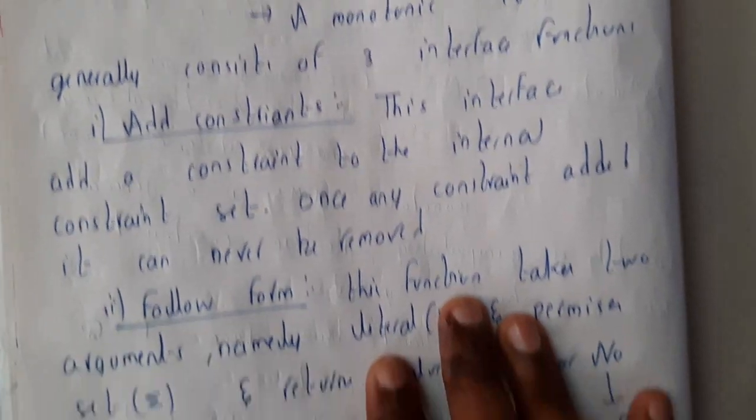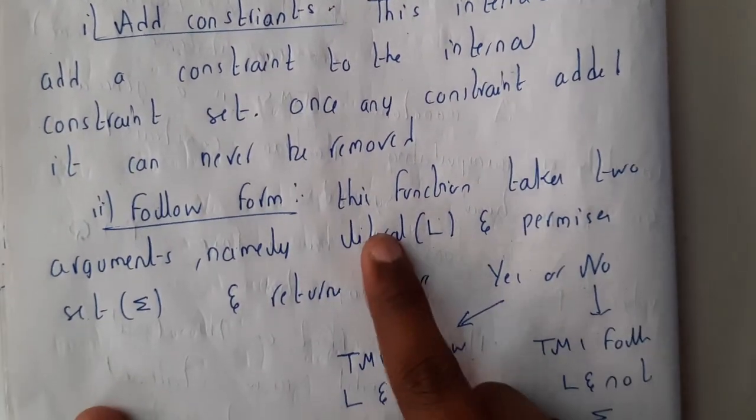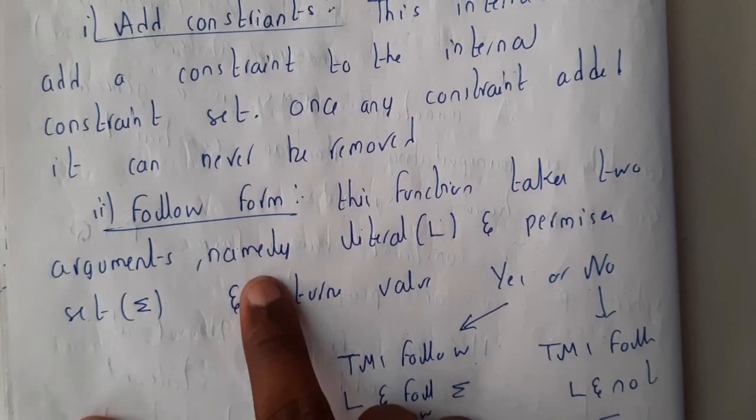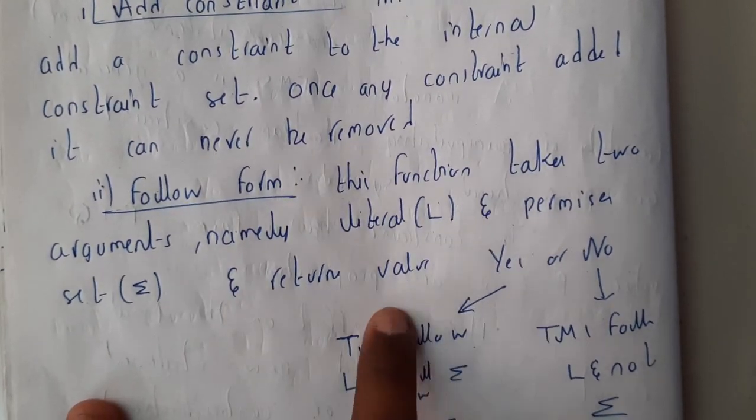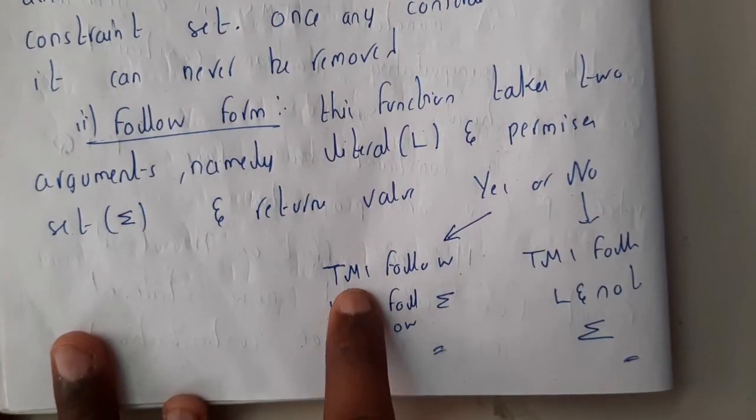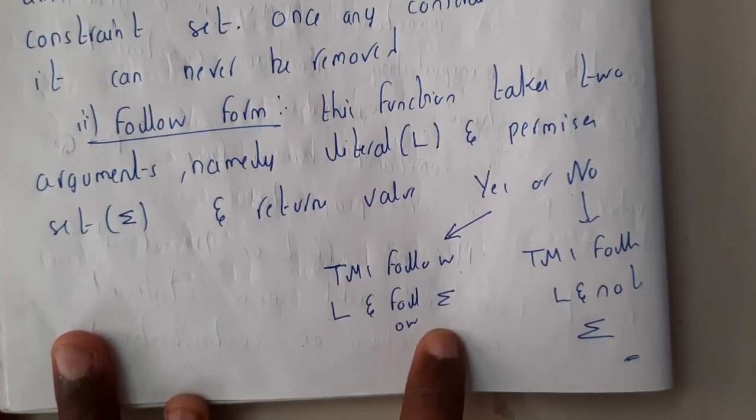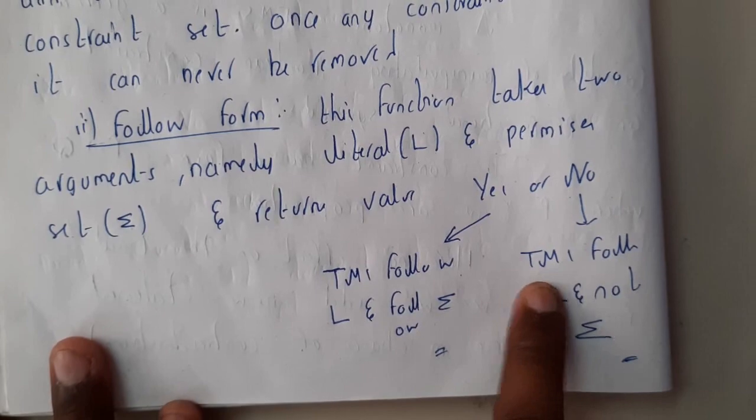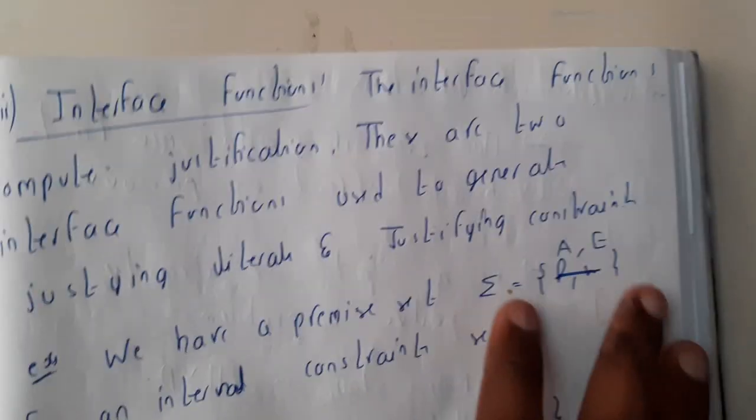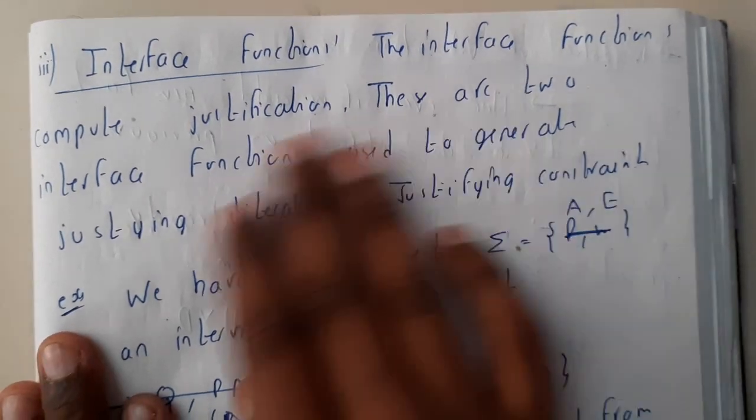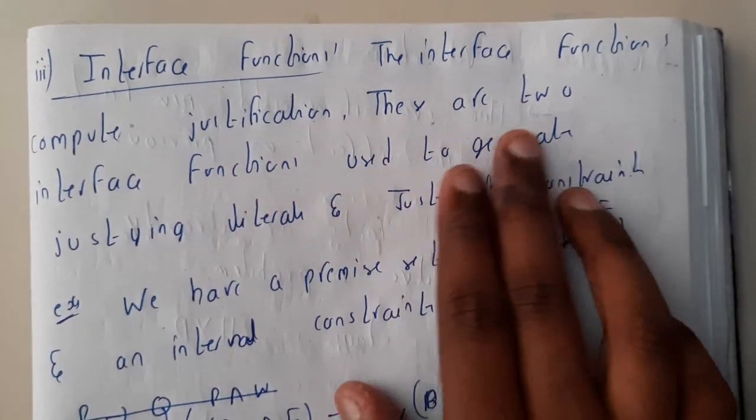Following forms: the function takes two arguments name literal and the permission sigma and return value yes or no. So yes means TMS follows l and sigma, no means TMS follows l but not sigma. Inference function: the inference function computes justification. These are the two inference functions used to generate justification literacy and justification constraint.